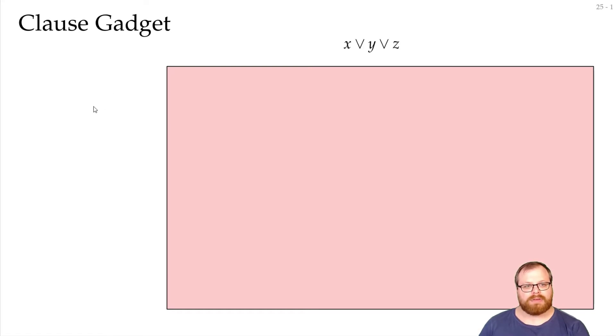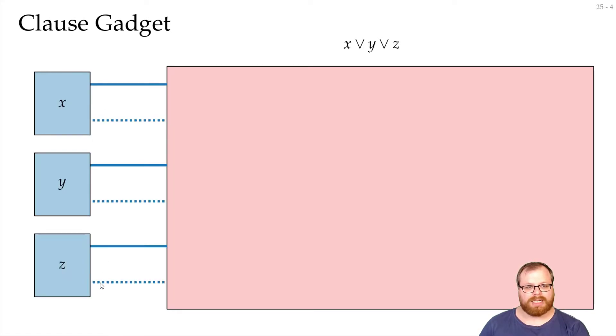We have the three variables x, y and z here, and it comes in either as true or as false. We have to make sure that one of those has to be true. Instead of getting a larger gadget here, we will divide it into two small sub-problems. We want to construct an OR gadget.